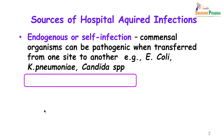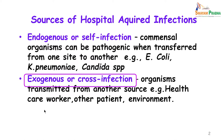What are the various sources of hospital acquired infections? You have endogenous or self-infection — that is, commensal organisms which, when transferred to another site in the body, become pathogenic. Examples are E. coli, Klebsiella pneumoniae, and Candida species. Then we have exogenous or cross-infection: organisms transmitted from another source, such as healthcare workers, other patients, or even the environment.